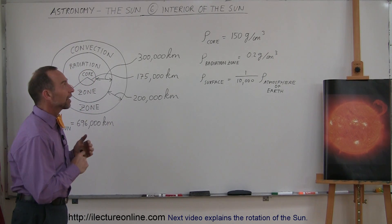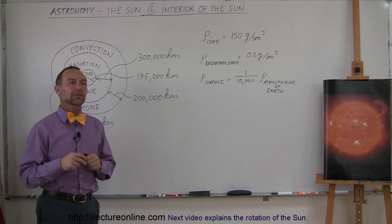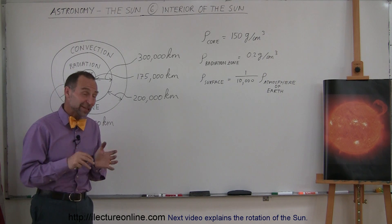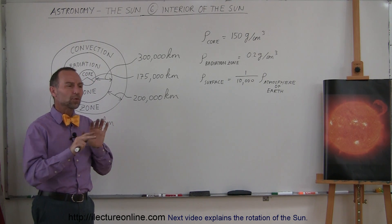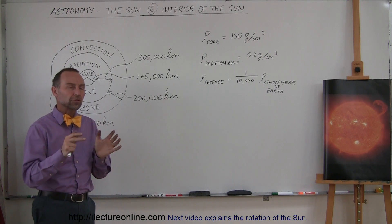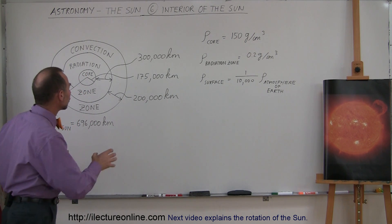Welcome to Electron Online, and now let's take a look at the interior of the Sun. Of course, we can't really take a look at the interior of the Sun because it's too hot in there, but we have a pretty good idea how the interior is structured, and we know that it's structured in three main regions.